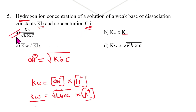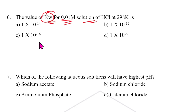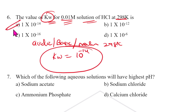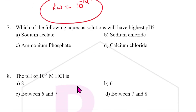The value of Kw for a 0.01 M HCl solution at 298 K: remember, whether the solution is acidic, basic, or neutral, at 298 K, Kw is always equal to 10⁻¹⁴. This is very important. The answer is A.